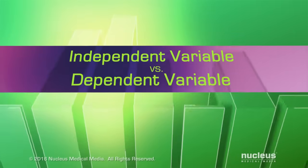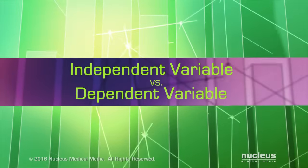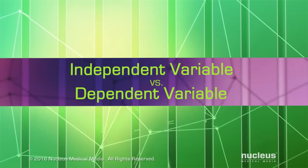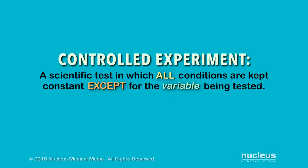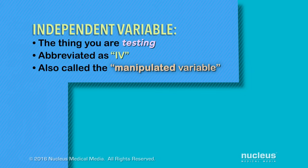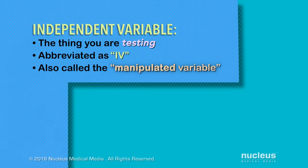Independent variable and dependent variable are important terms related to controlled experiments. Remember, a controlled experiment is a scientific test in which all conditions are kept constant except for the variable you're testing. The independent variable is the thing you're testing in an experiment. It's often abbreviated as IV and sometimes called the manipulated variable because you change or manipulate this variable.